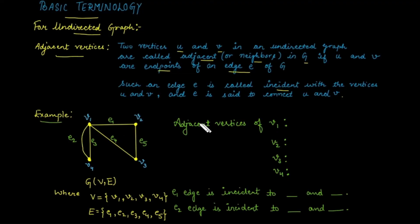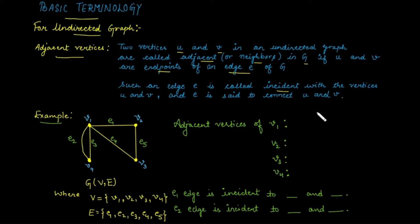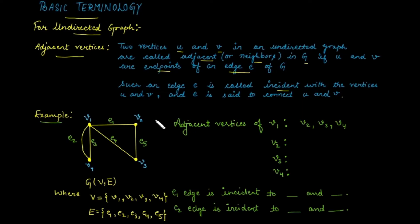For example, in this graph G, the adjacent vertices of v1 are v2, v3, and v4, because they are connected with some edges. Adjacent vertices of v2 are v1 and v3, because v1 is connected with v2 by edge e1, and v3 is connected with v2 by edge e5. So adjacent vertices of v2 are v1 and v3.